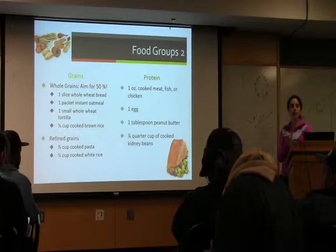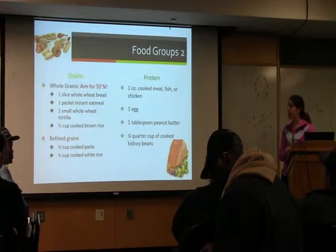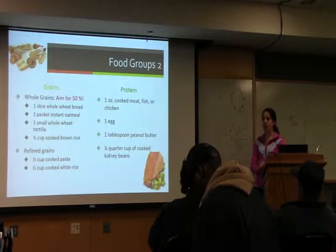And then the next category is protein. Protein is going to be your meat, your fish. Also eggs can give a lot of protein, or even things like peanut butter, beans, or lentils.